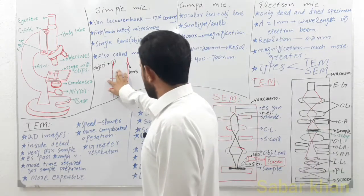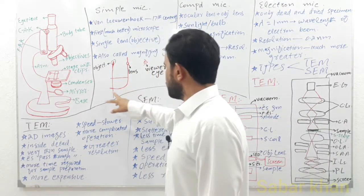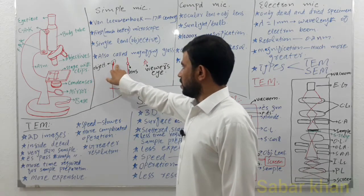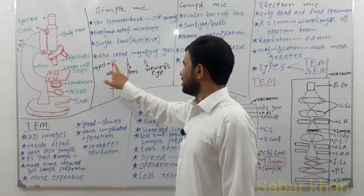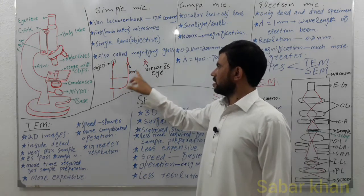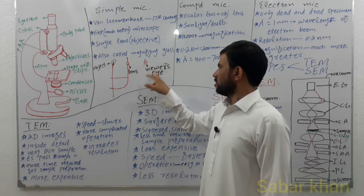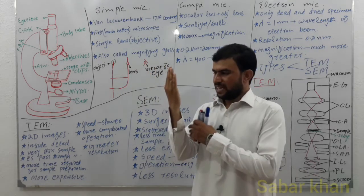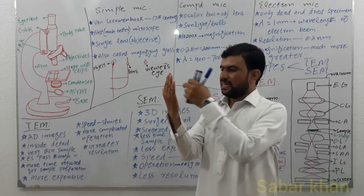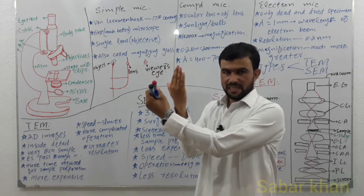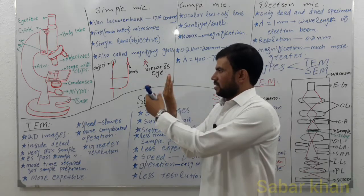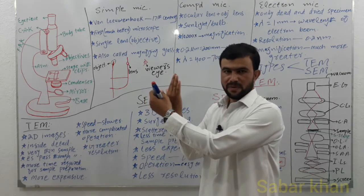This is the rough diagram of the simple microscope. The object of interest is present at the bottom, the objective lens is in the middle, and the viewer's eye is at the top. So the viewer can look at the object of interest through the single lens.